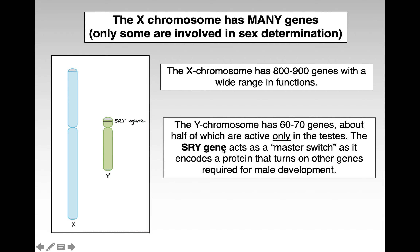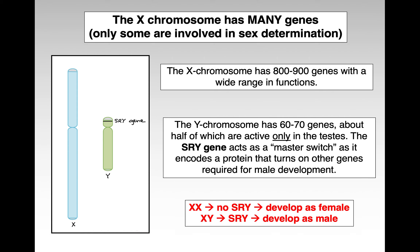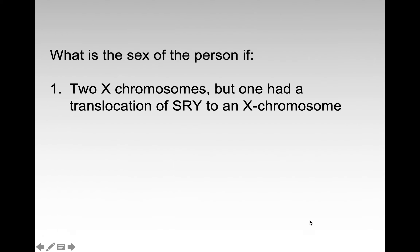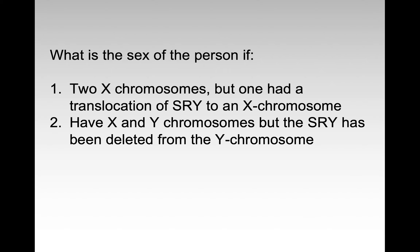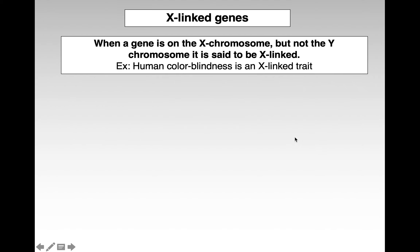In particular, the SRY gene is a transcription factor, meaning it's a master switch. It can go into the nucleus of a cell and turn on lots of other genes required for male sex determination. So if you have an SRY, you develop as a male. If you have two X chromosomes but one has an SRY, you'll be male. If you have an X and a Y but the SRY has been deleted, you will be female.